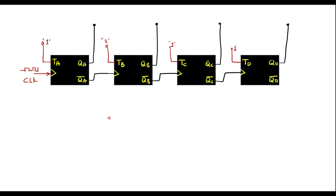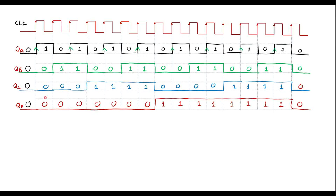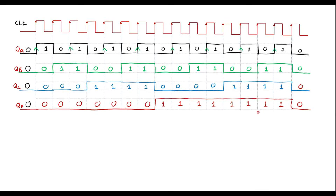This is the complete 4-bit asynchronous counter. We can observe that at the beginning it is 0000, then 0001, 0010, 0011, 0100 — that is 4 — then 5, 6, 7, 1000 — that is 8 — then 9, 10, 11, 12, 13, 14, 15, and again it will become 0000. This is how the counter works.